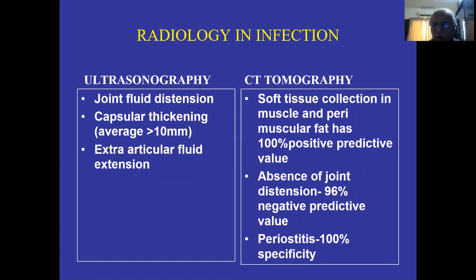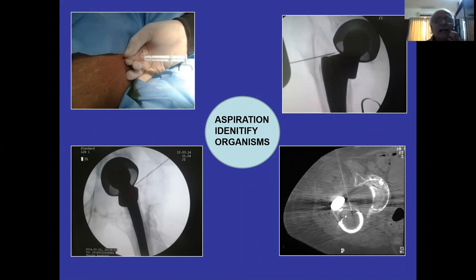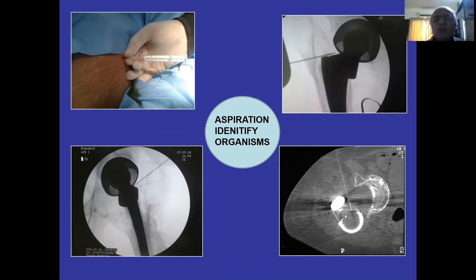We discussed ultrasound and CT — that is important. The next is aspiration, to identify the organism. I think it is absolutely mandatory before touching this patient. You must get something — aspiration to identify. This can be done on image intensifier or on the CT scan. This gives you an idea of what type of organism, and you can accordingly act on it.